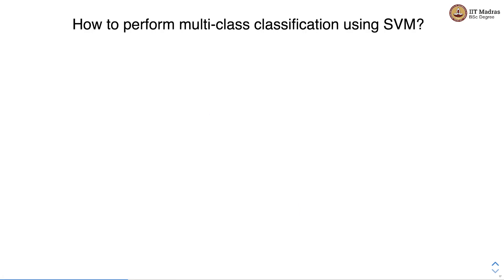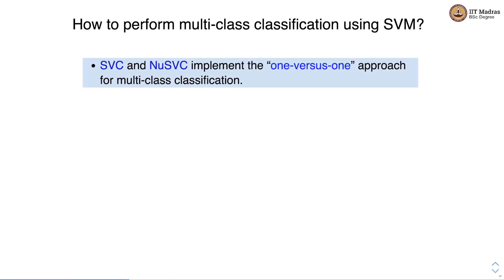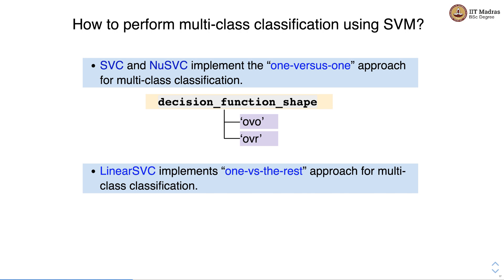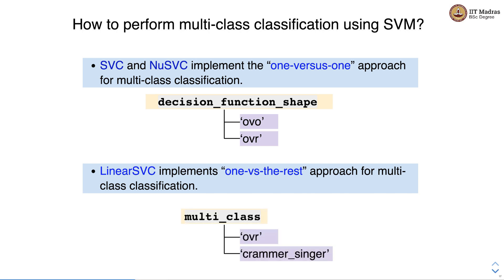For multi-class classification using SVM: SVC and NuSVC implement the one-versus-one approach, where we can also specify the decision function shape as one-versus-one or one-versus-rest. LinearSVC implements the one-versus-rest approach. Multi-class can also be handled using the Crammer-Singer method, which is more optimized but rarely used in practice because it is slower.